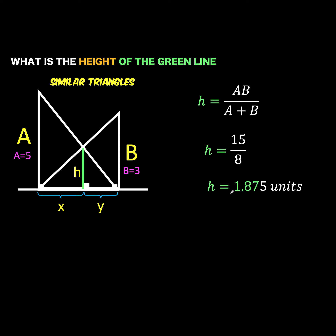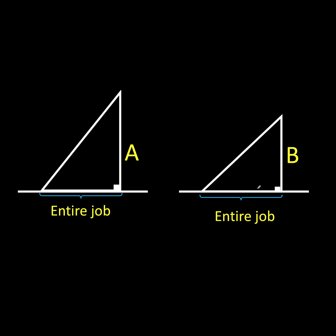Now the other question is: how is this related to solving work problems? Let's represent the work problem visually. We have two right triangles. In the base we put the length of the entire job, and in the height we put the number of hours to finish the job. Another way of representing this is to interchange the labels — put the job in the height and the time in the base. Because multiplication and addition are commutative, it doesn't matter if we interchange these. This is the representation of the work done by A, and this is the representation of the work done by B.